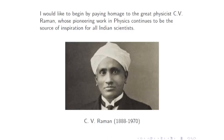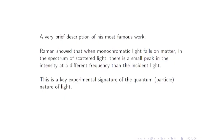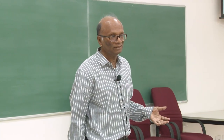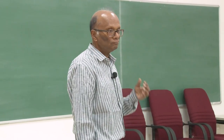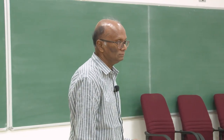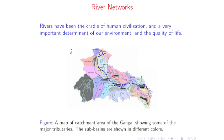Here is a three-line description of Raman's most famous work. Raman showed that when monochromatic — single wavelength — light falls on matter, in the spectrum of scattered light there is a small peak at a different frequency than the incoming light. This was a great surprise, because you'd expect scattered light to have the same frequency. But a little bit has a different frequency, and this is a key experimental signature for the quantum nature of light. To understand why this can happen, you have to think of light as made up of photons — one of the first significant evidences for the particle nature of light.